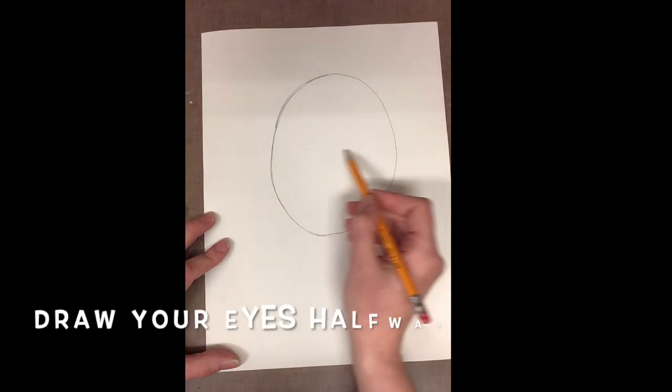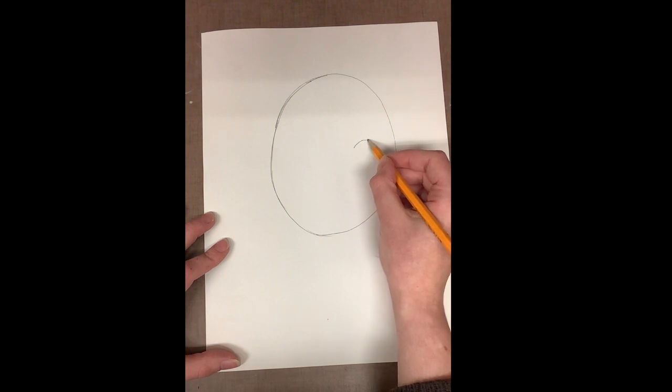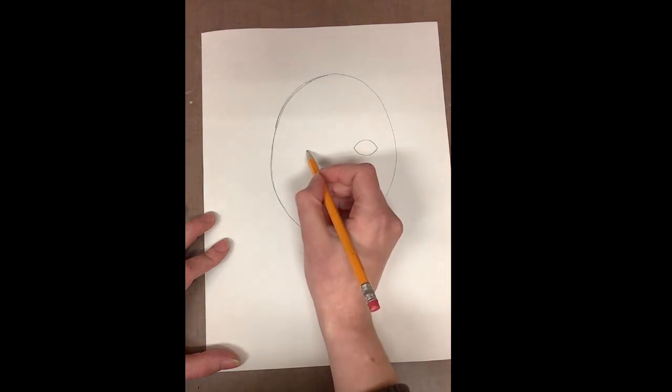And then we'll begin to draw our eyes. Your eyes are about halfway down from the top of your head. To draw your eyes, draw a football shape, kind of like an oval laying on its side but with pointed corners.